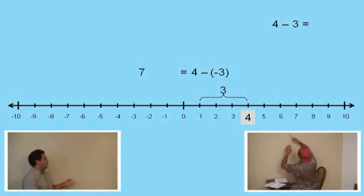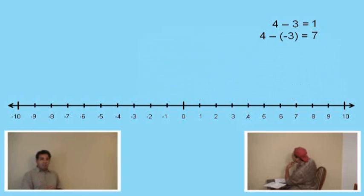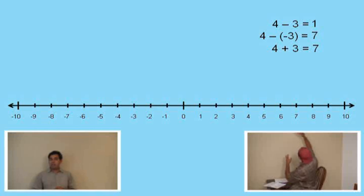4 subtract 3 was what, Charlie? 1. That's right. It was 1. Okay, now let's look at the 4 subtract negative 3. Well, that went to the right. That is 7. Yes, it is. And now, 4 subtract negative 3 appears to be giving us the same result as what, Charlie? 4 plus 3. 4 plus 3. So we're seeing that 4 plus 3 is the same as 4 subtract negative 3. They're both giving us 7.